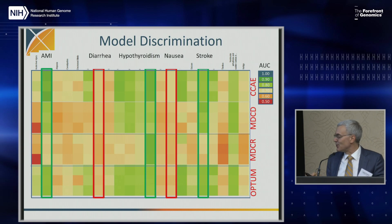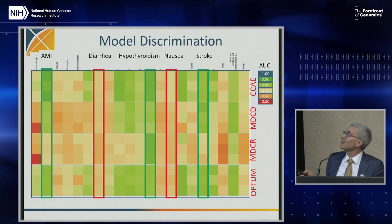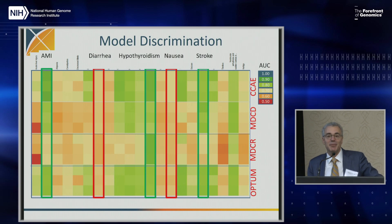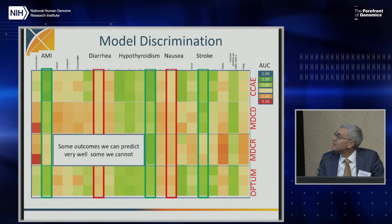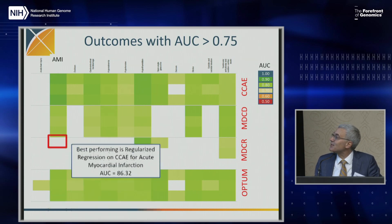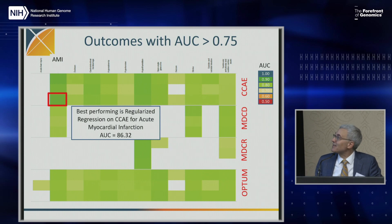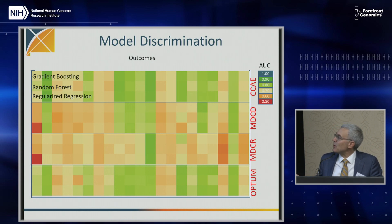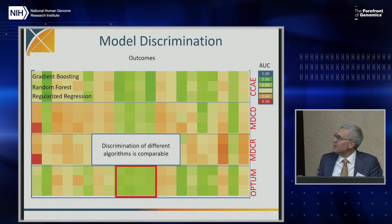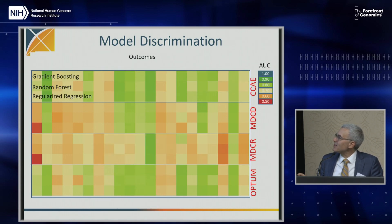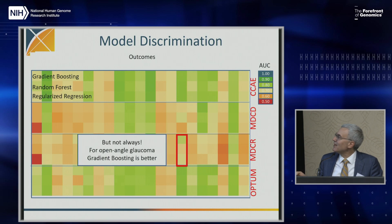Looking across diseases, we do a good job predicting stroke, hypothyroidism, and acute myocardial infarction, but not diarrhea and nausea — probably because they're vague symptoms, not reliably documented, and have many causes. The diseases with AUCs over 0.75 show that Medicare is consistently the lowest, and the best performing model reaches 0.86. Looking at model discrimination, each triplet of algorithms tends to look similar — for the most part, the algorithms are not the big difference; it's the data and what you're trying to predict.